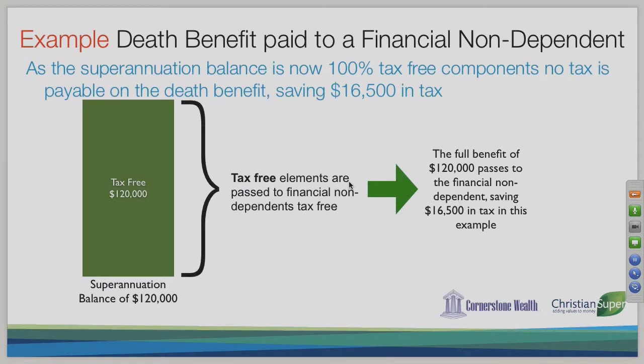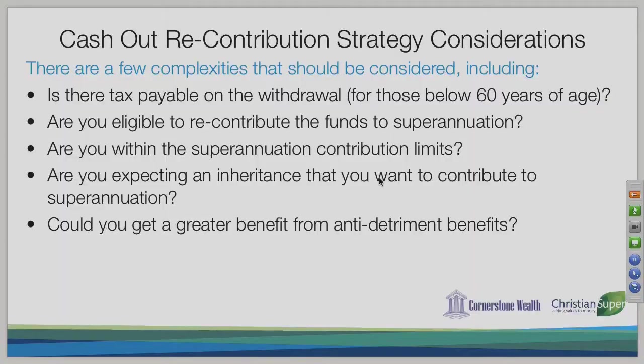Once recontributed, that $120,000 in your super fund is defined as tax-free components. If it then passes to your financial non-dependents, the full $120,000 transfers to them rather than having to pay the $16,500 in tax. Simply by cashing out and putting it back in again, you could potentially save your beneficiaries — your adult children — $16,500. If you have half a million dollars in super, multiply that by roughly five. It doesn't have much benefit for you or your spouse, but it does benefit your beneficiaries.